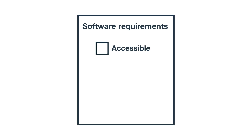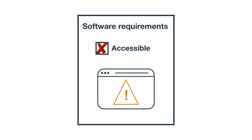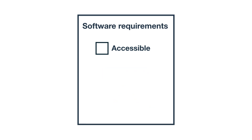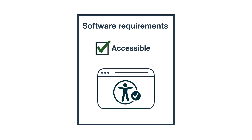When exploring these third-party software solutions, an important part of assessing the product should be its accessibility. Picking an inaccessible third-party vendor can introduce accessibility issues that are out of your control. On the other hand, asking the right questions and doing basic accessibility checks can keep your product or website accessible for your employees and users.